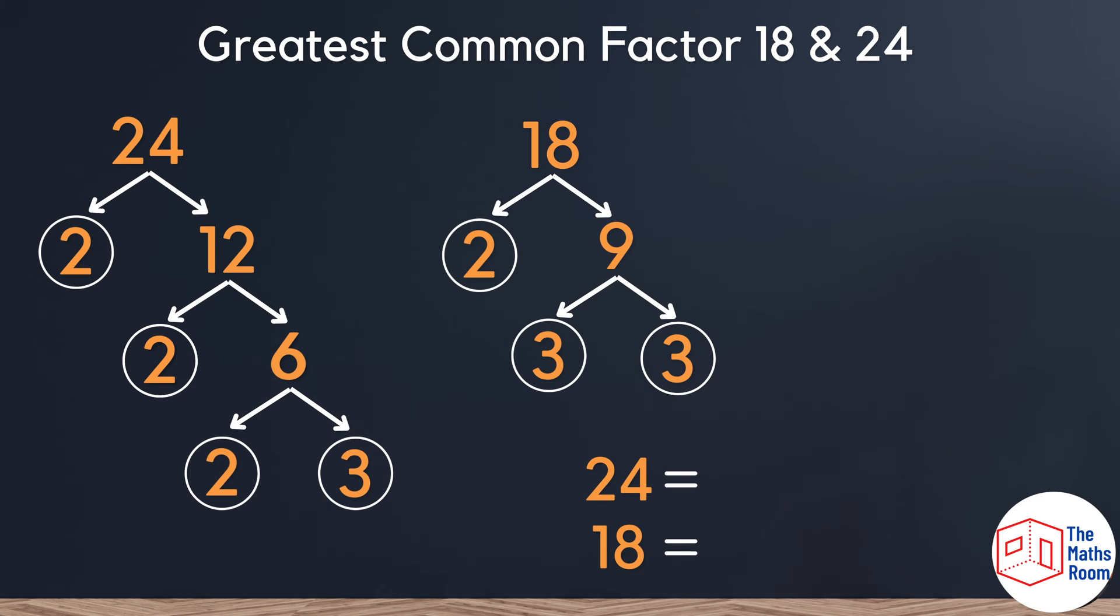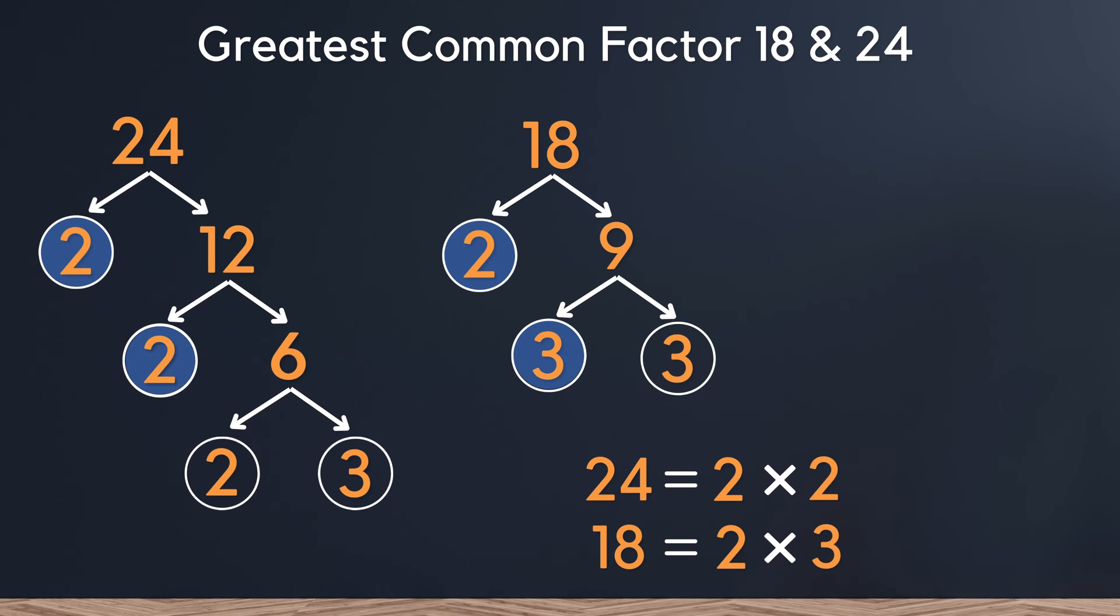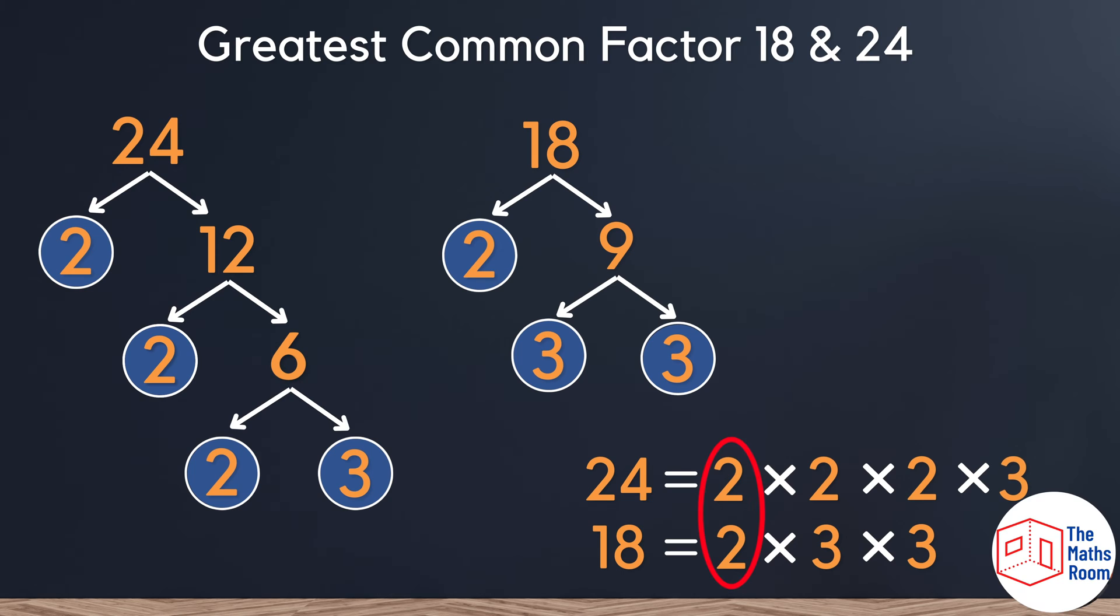Now that we've split each of our numbers into their prime factors, you'll just write all of the leaves of our trees multiplied together. The reason that we do this is because it makes it really easy to see which of the numbers are repeated in both 18 and 24. So here we can see that 2 is common to both and 3 is common to both.